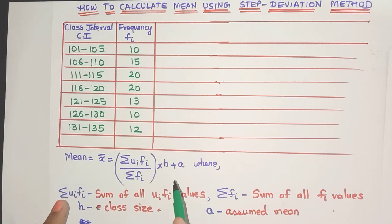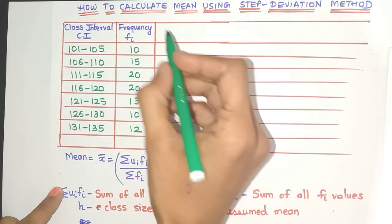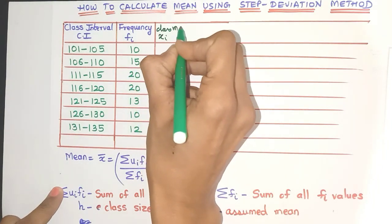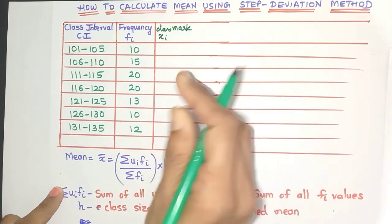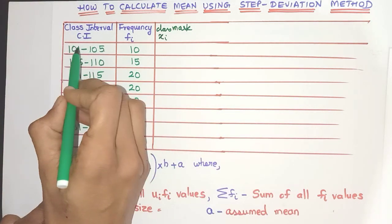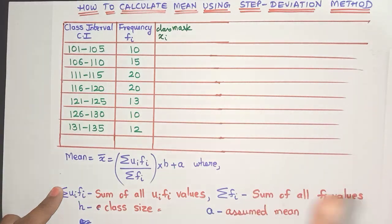So what is the first column? Well, it's known as the xi column or the class mark. Now what is the class mark column? It's nothing but adding the upper limit and lower limit of the class interval and dividing it by 2.